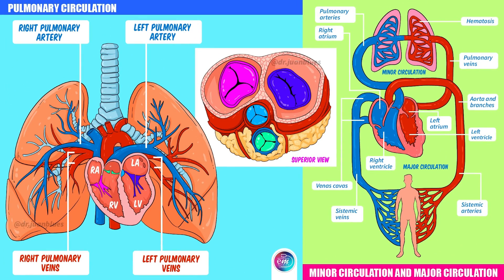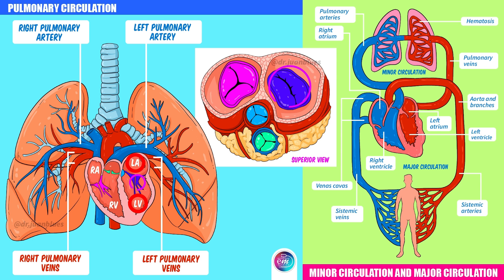Let's go over this process so that we can fully understand how the valves work. First, blood goes from the right atrium to the right ventricle, passing through the tricuspid valve. Second, blood goes from the right ventricle to the pulmonary trunk, passing through the pulmonary valve. Third, blood goes from the left atrium to the left ventricle, passing through the mitral valve. Fourth, blood goes from the left ventricle to the aortic artery, passing through the aortic valve.